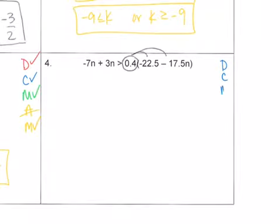At this time, this would be a good time to pause the video and see if you can do problem 4. So if you pause the video, I'm going to work out problem 4 after this. So pause it, and then whenever you come back, you'll see the explanation. So I do have parentheses to distribute. 0.4 times negative 22.5 is negative 9. 0.4 times negative 17.5n is negative 7n.